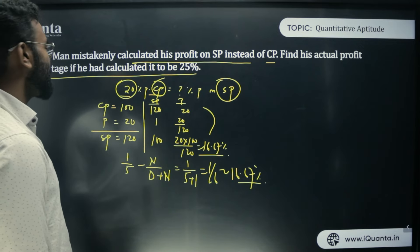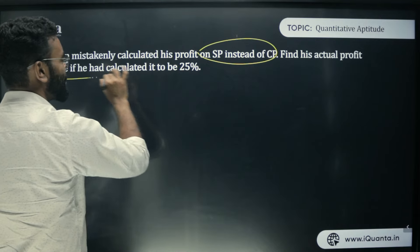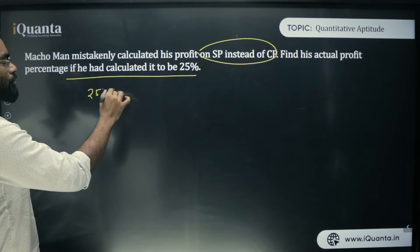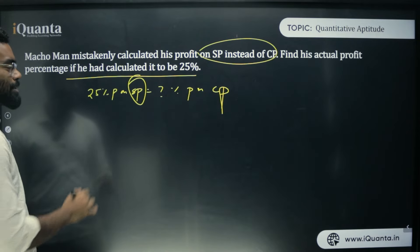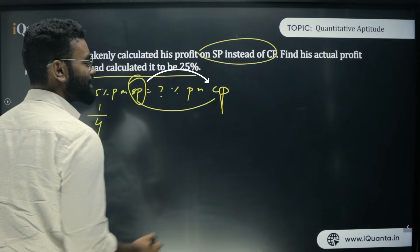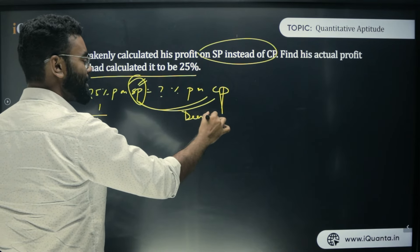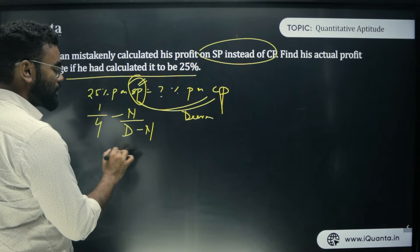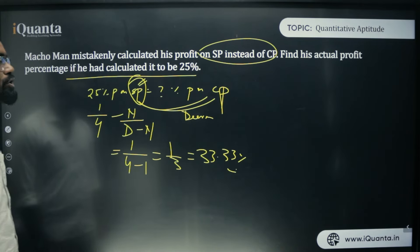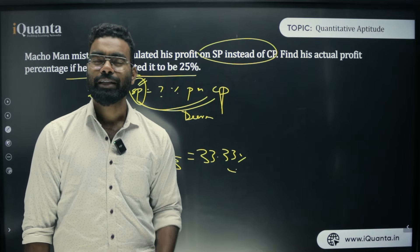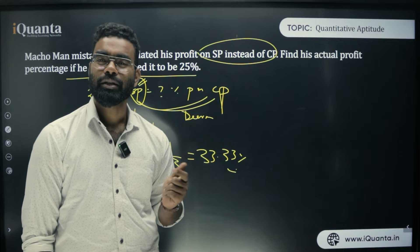Now for the main question: 25% profit on SP is what percent profit on CP? Here 25% = 1/4. We're converting from SP to CP (base decreasing). For decreasing base, use numerator/(denominator − numerator) = 1/(4−1) = 1/3 = 33.33%. So the actual profit percent on CP is 33.33%. Rule: if base increases, add; if base decreases, subtract.